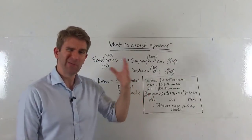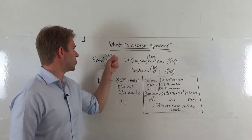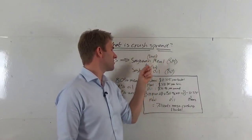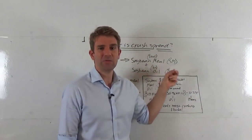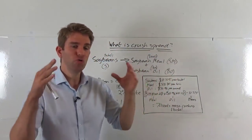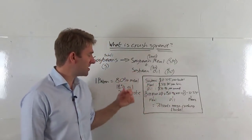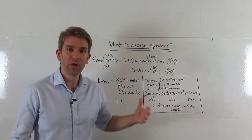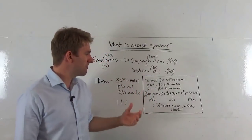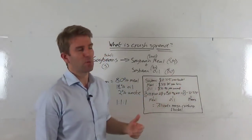But unfortunately, soybeans trade in bushels, soybean meal trades in tons, and soybean oil trades in pounds. So to get a true representation of how much we're potentially making or what the margin is, we have to convert all those into one common unit. Really what we do is, let's look at an example. A good way of doing it: